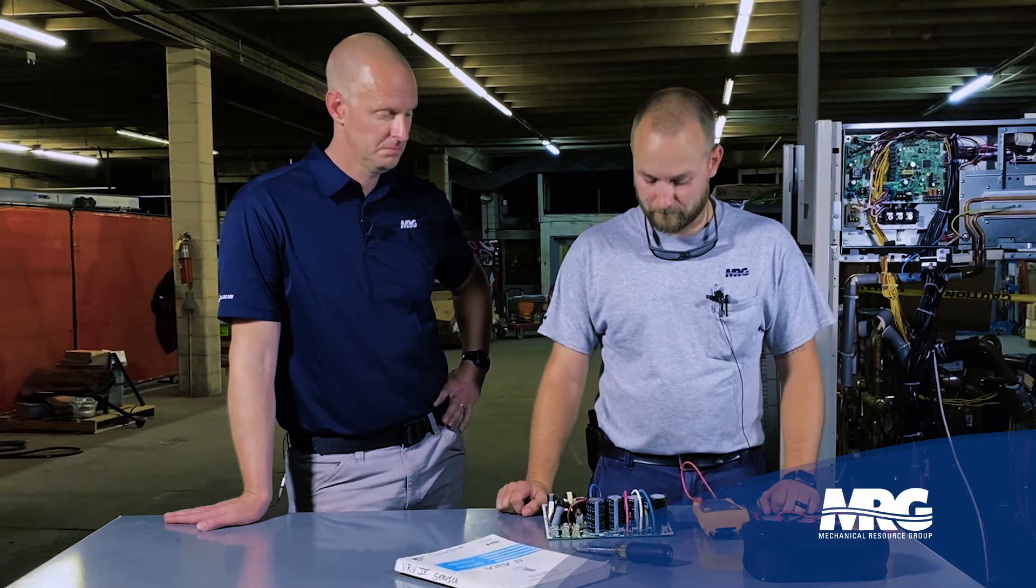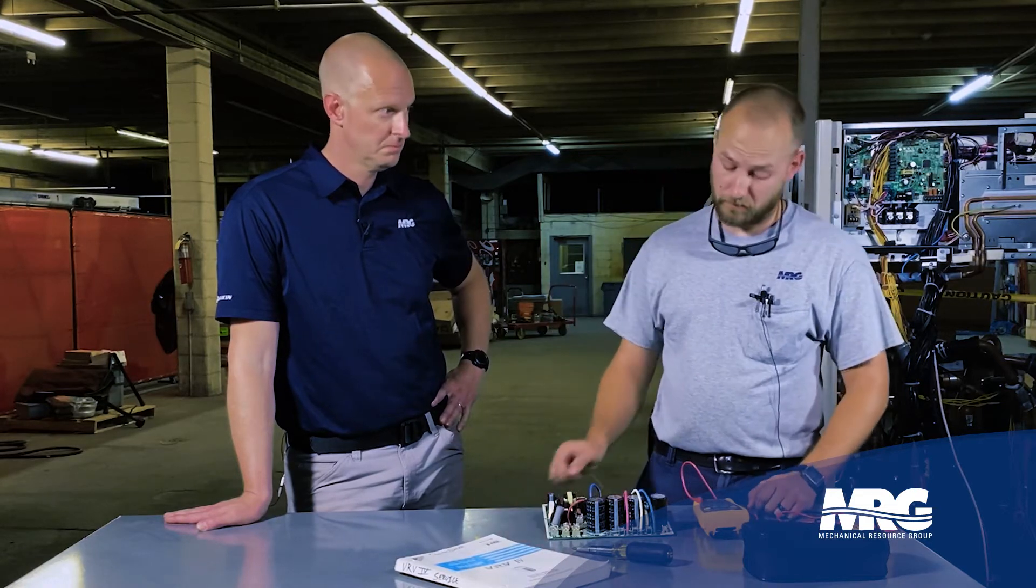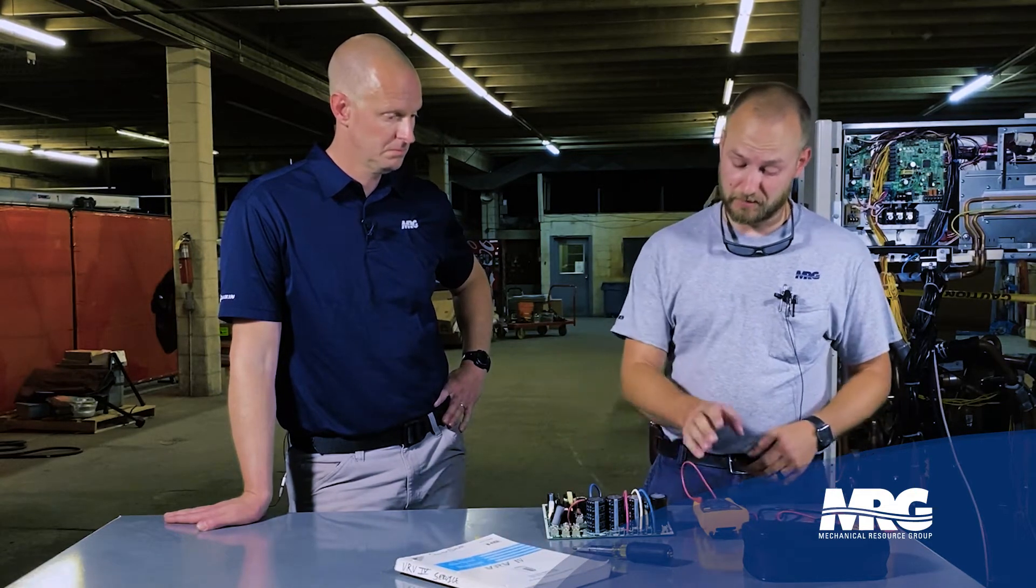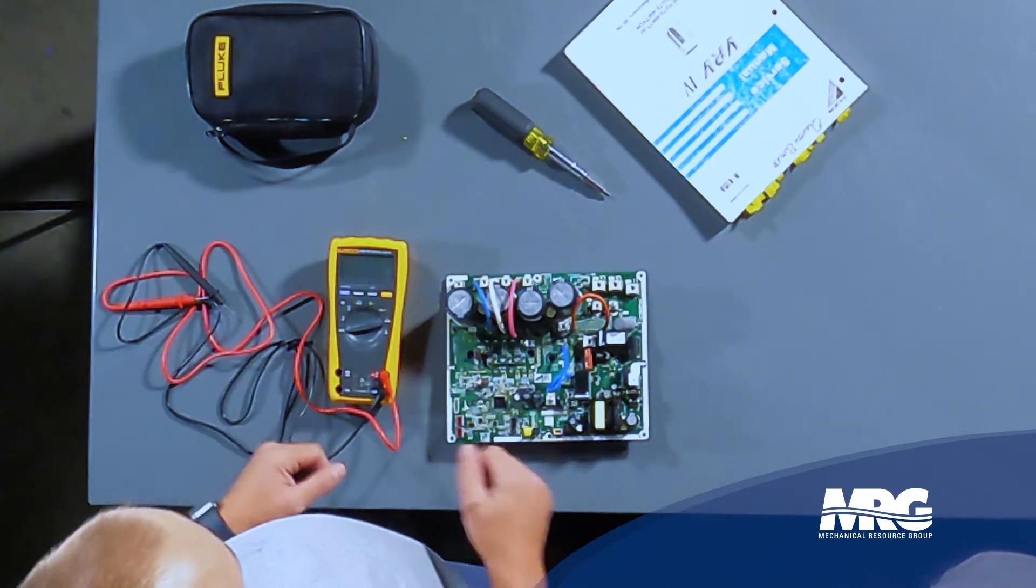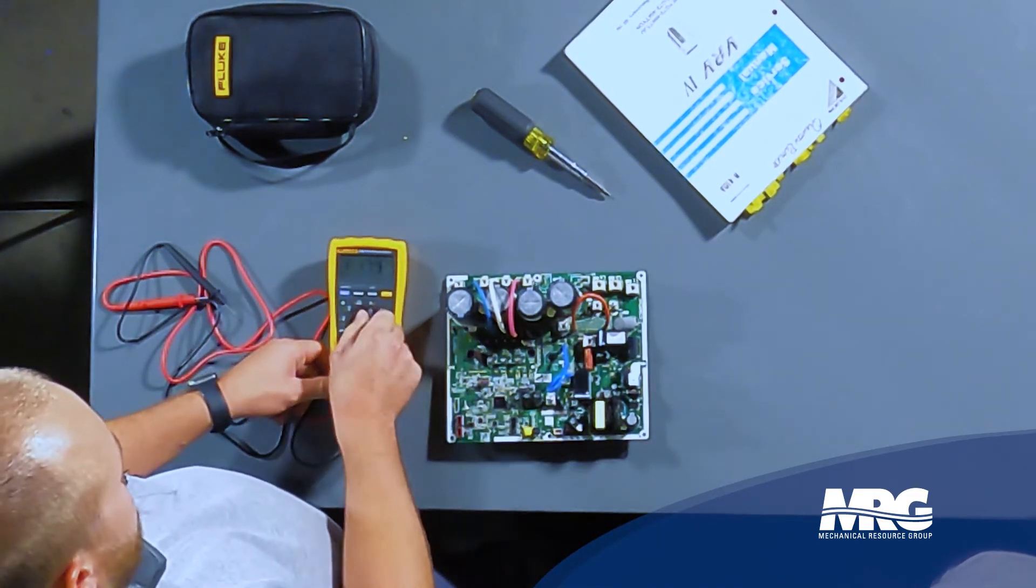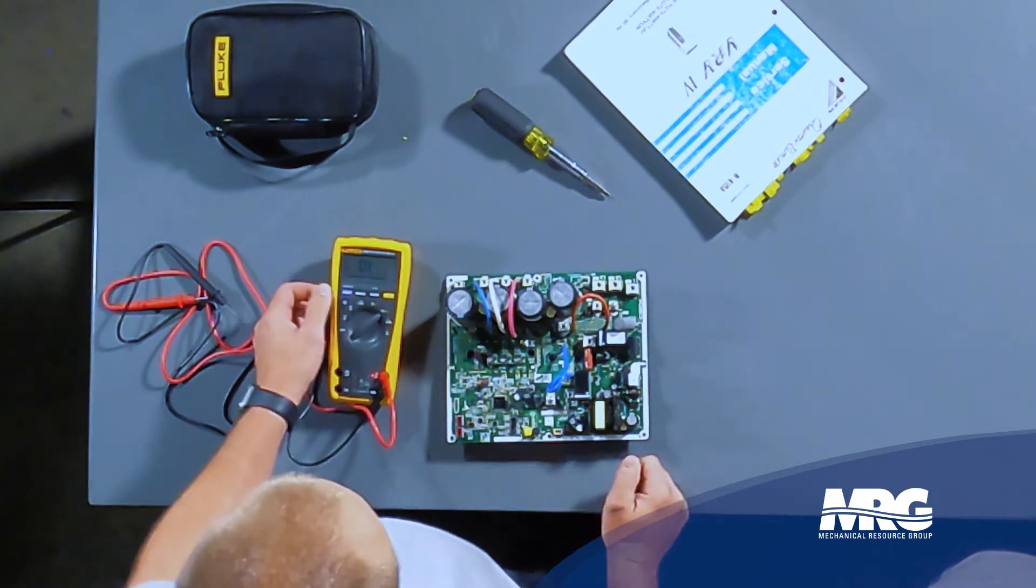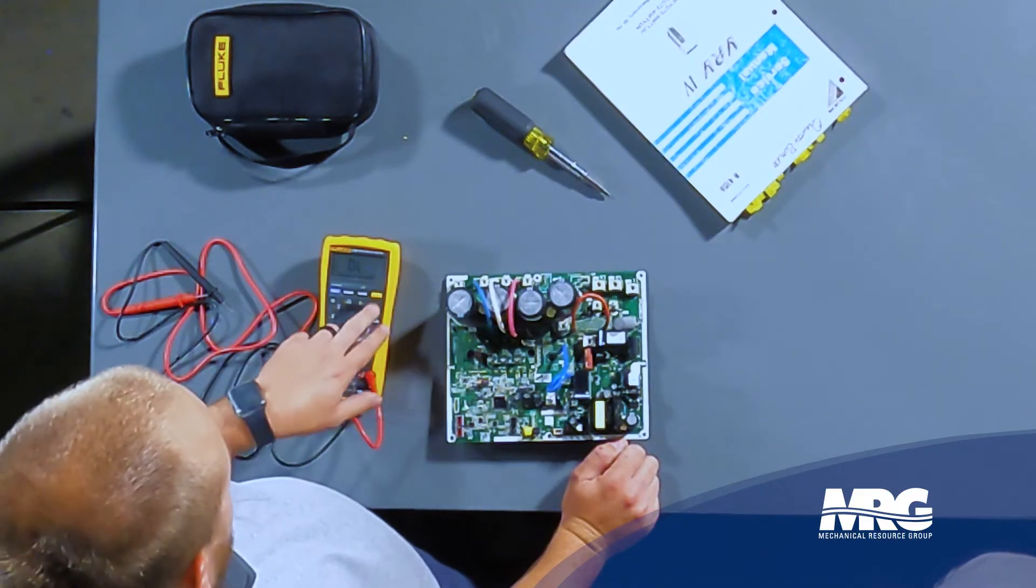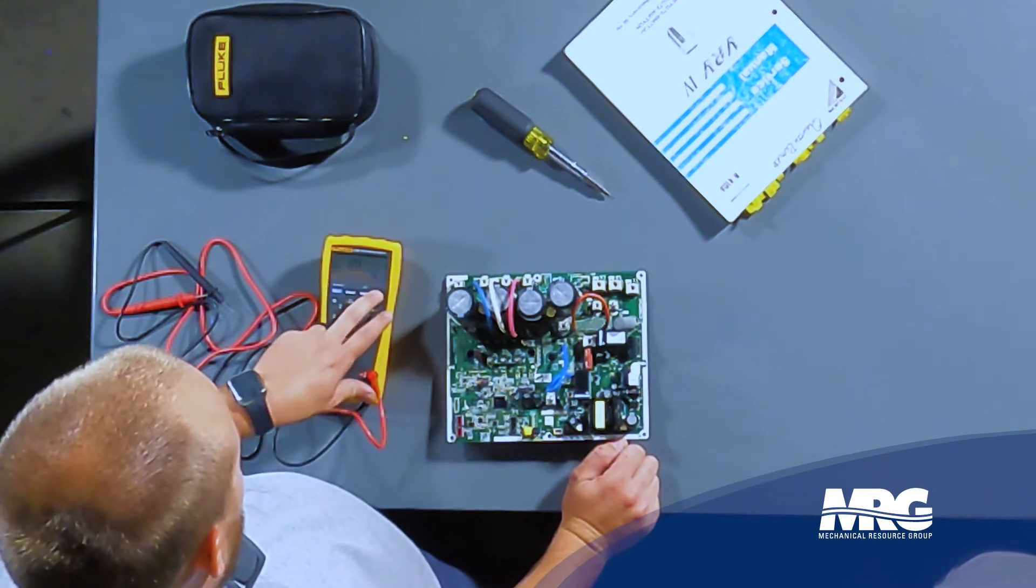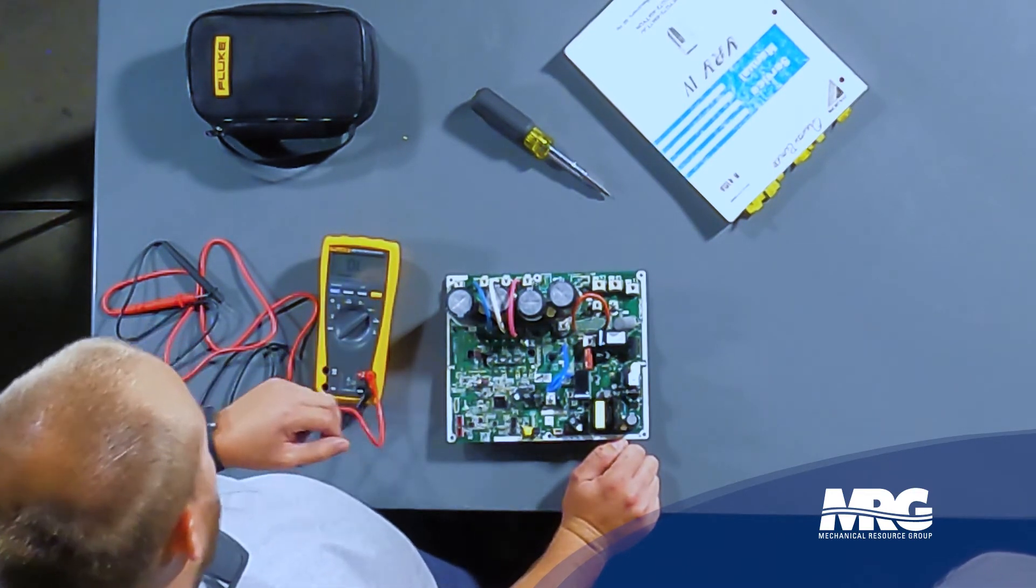So the first thing that you're going to want to have is a good meter that has the capability of reading diodes. The first thing you're going to want to do: turn it on. What are you using here? This is a Fluke 179. Okay, so this is a new meter for me, it's a little bit fancier than what I'm used to. We're going to go ahead and change it over to the diode setting.